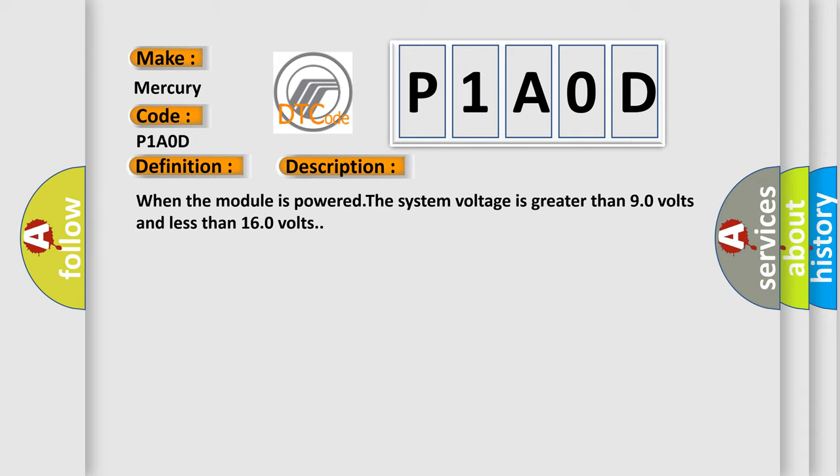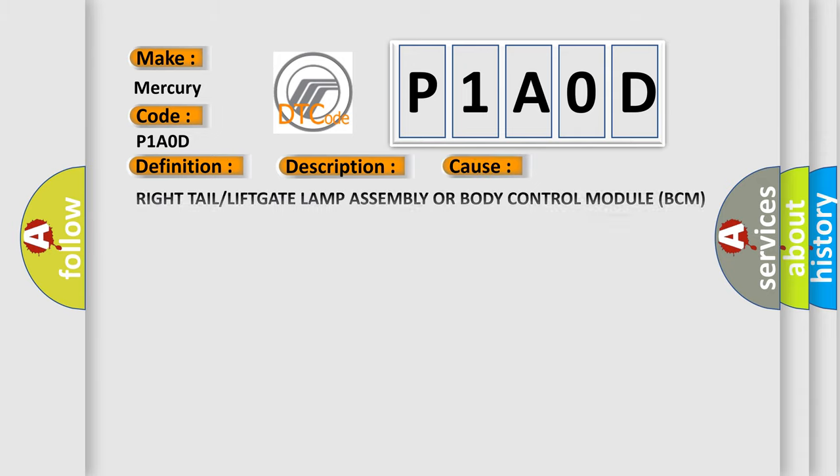This diagnostic error occurs most often in these cases: Right tail or liftgate lamp assembly or Body Control Module BCM connections, right tail lamp fault sense 2 circuit shorted to voltage, right tail lamp fault sense 2 circuit shorted to ground, right tail lamp fault sense 2 circuit open or high resistance, right tail or liftgate lamp assembly, or Body Control Module BCM.